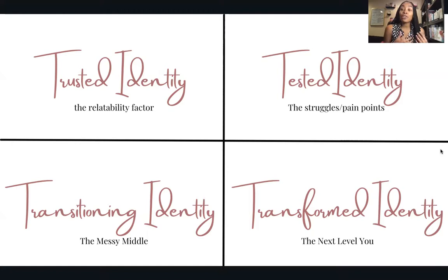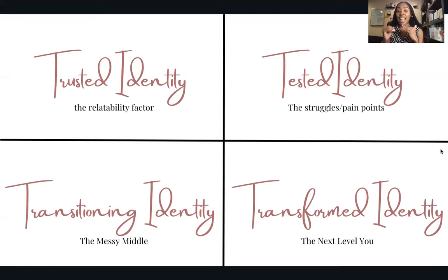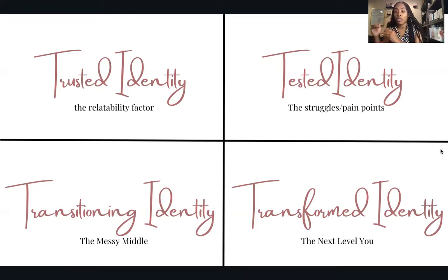Think about how you can weave in that messy middle. If you're a weight loss coach, maybe the transitioning identity is where someone has lost a lot of weight but then stagnates for a bit at a weight that's not their ideal. What is the lesson that takes place there, and how can they stay committed to the ultimate vision to get to the transformed identity — the final of the four pillars?